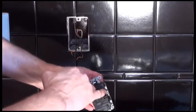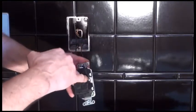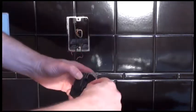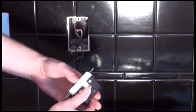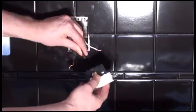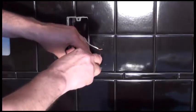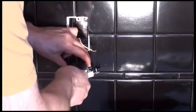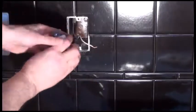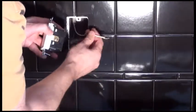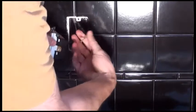So these are made so you can just trim the wire and stick it in the hole here, and then tighten it up and it clamps onto the wire. Black goes to the gold. White goes to the silver-colored screw.